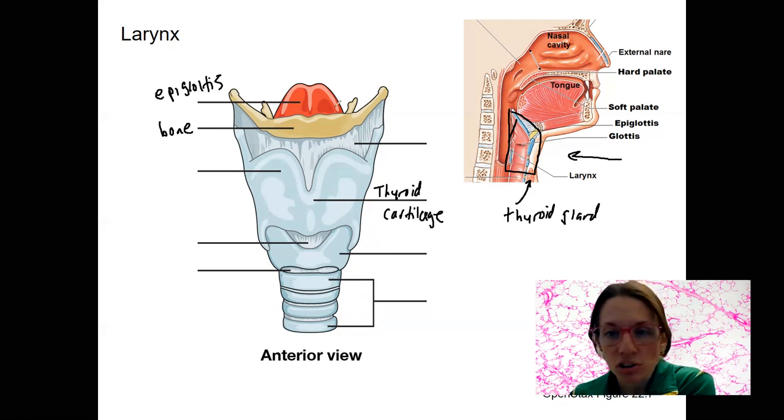We'll see one more structure, which is actually the glottis, where our vocal cords are going to be located when we look at a different view. From this view, what we can see, what I want to point out is the epiglottis.